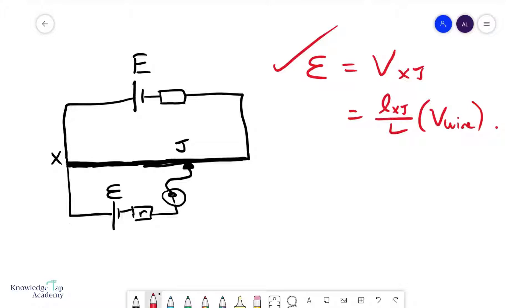Now, in order to find the internal resistance R, what we typically do is connect a known resistance R in parallel like so. When you do this, you will find that your balance point is going to shift. It will no longer be at J. It might go somewhere here, but it will definitely go to the left. Let's call this new balance point K.